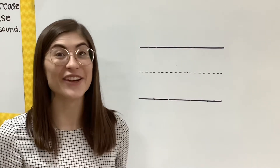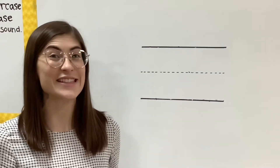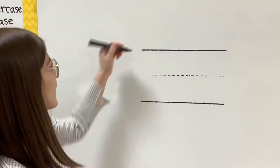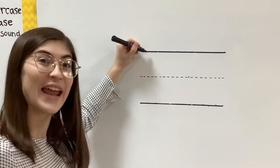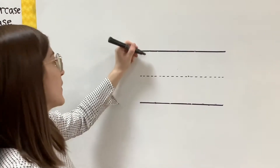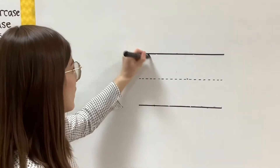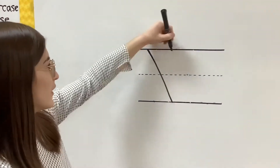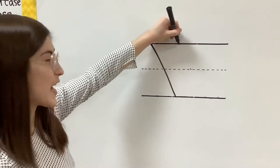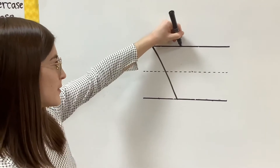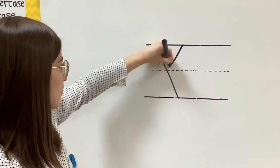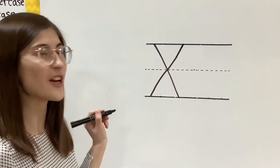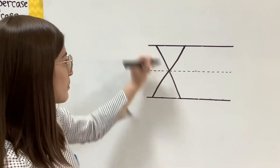Now we're going to write the letter X. X — we do some diagonal lines. We go down, and one more time, from the top to bottom. Do you see how it crosses in the middle?